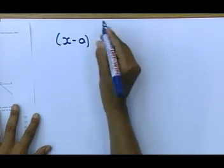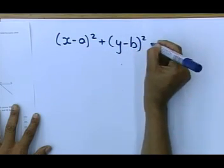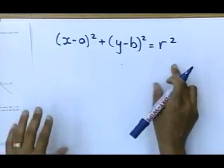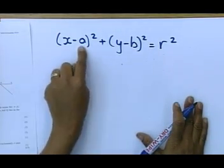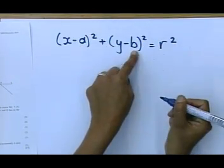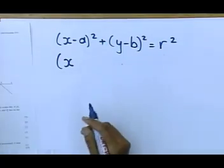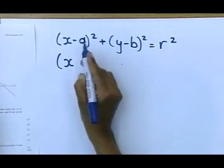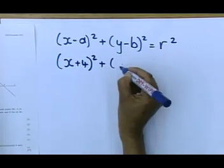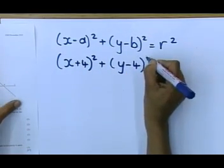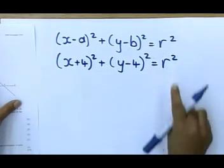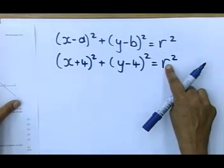Our next question asks us to find the equation of the circle. Remember, this equation is not centered at the origin. It's centered away from the origin. So you immediately write down your formula, which says X minus A squared plus Y minus B squared is equal to R squared. A is the X coordinate of the center, and B is the Y coordinate of the center. So can we substitute that in? What is the X coordinate of the center? Negative 4. So it becomes plus 4. And the Y coordinate of the center is 4.